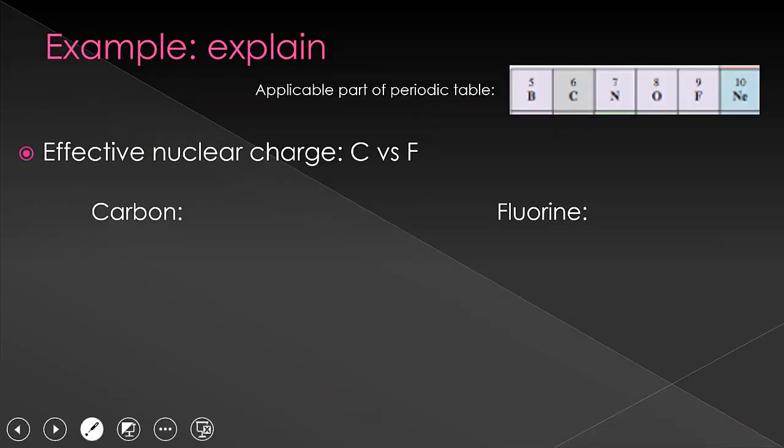Here, I ask you to explain the difference in effective nuclear charge between carbon and fluorine. Of course, we can simply use the periodic trend to decide that fluorine has a higher effective nuclear charge than carbon, but we need to fully understand why this is. Simply saying the trend goes left to right would not be the correct answer. So carbon has six protons and six electrons, giving it an electron configuration of 2s2, 2p2.